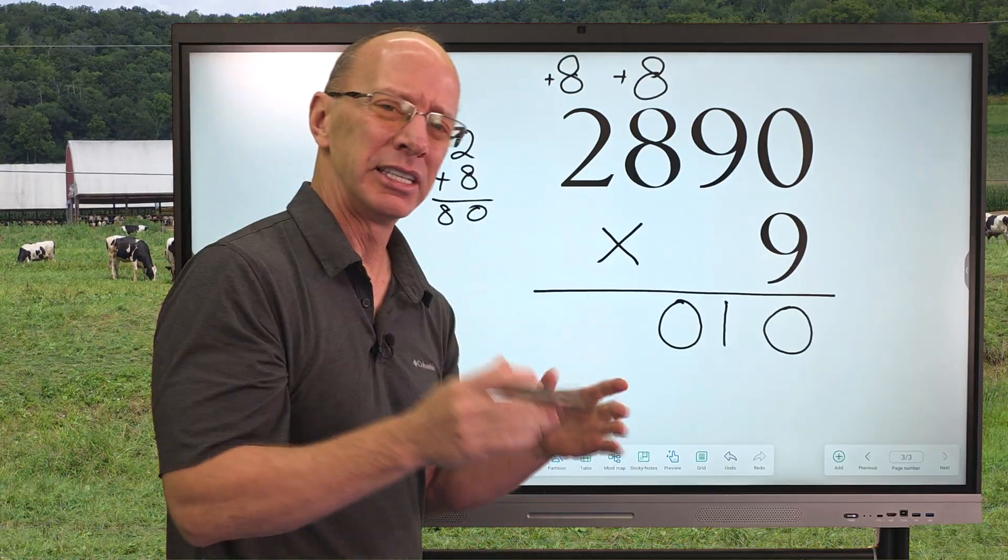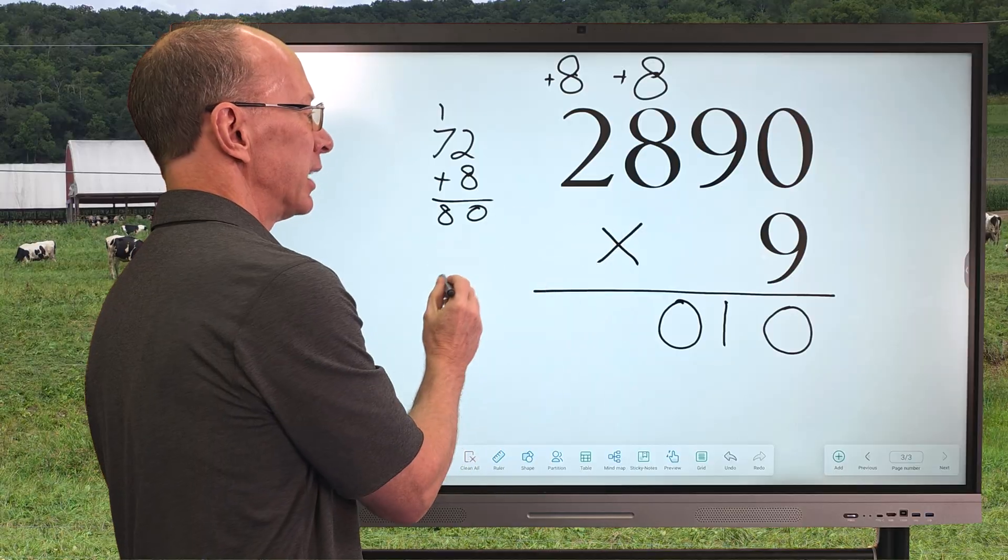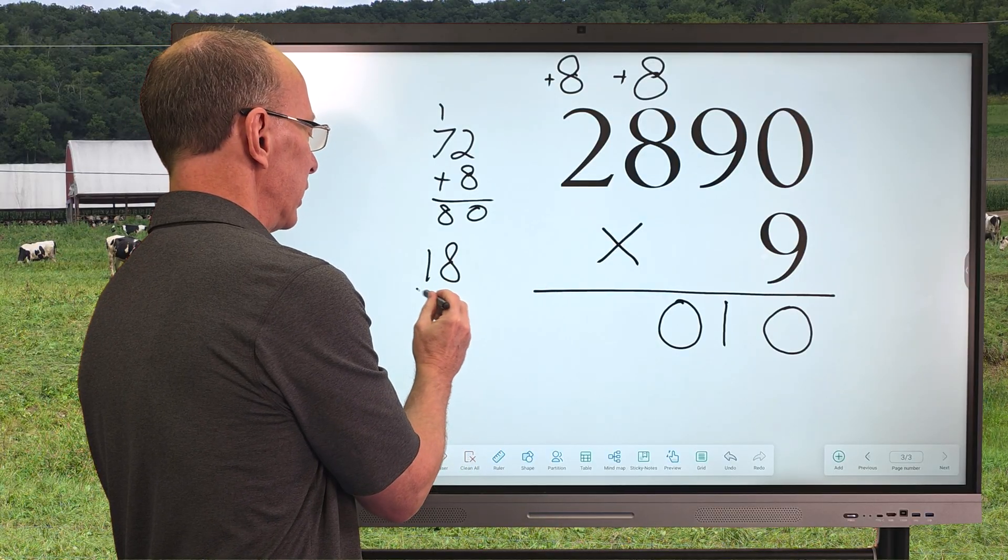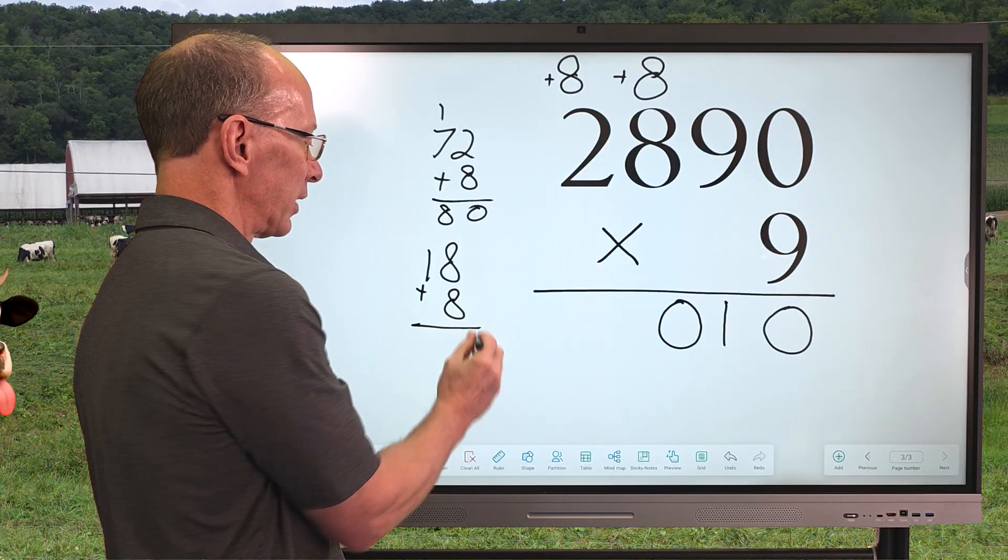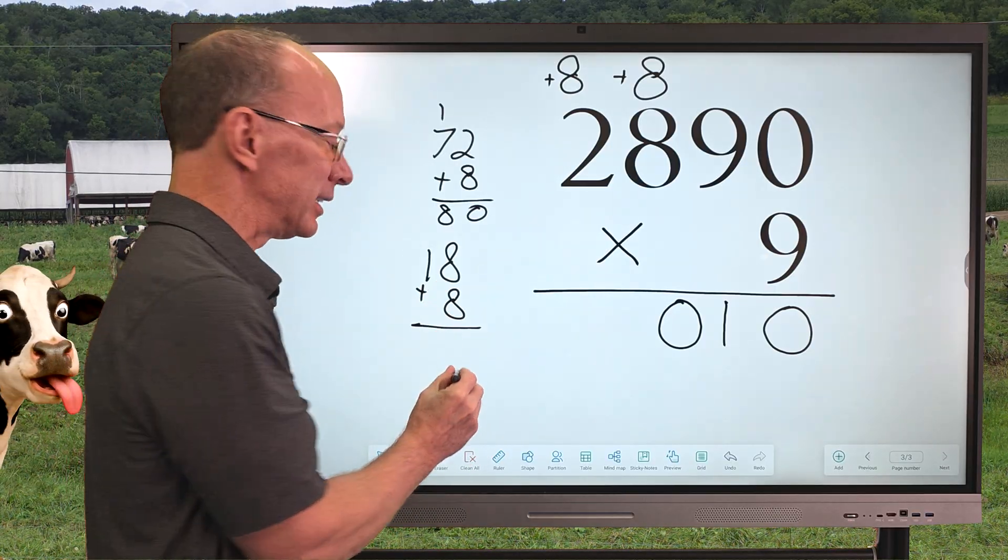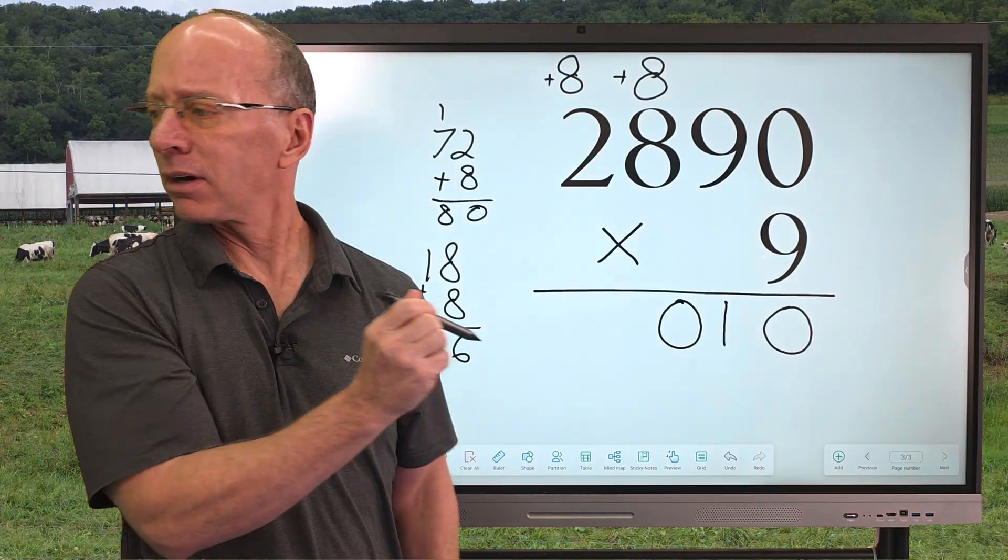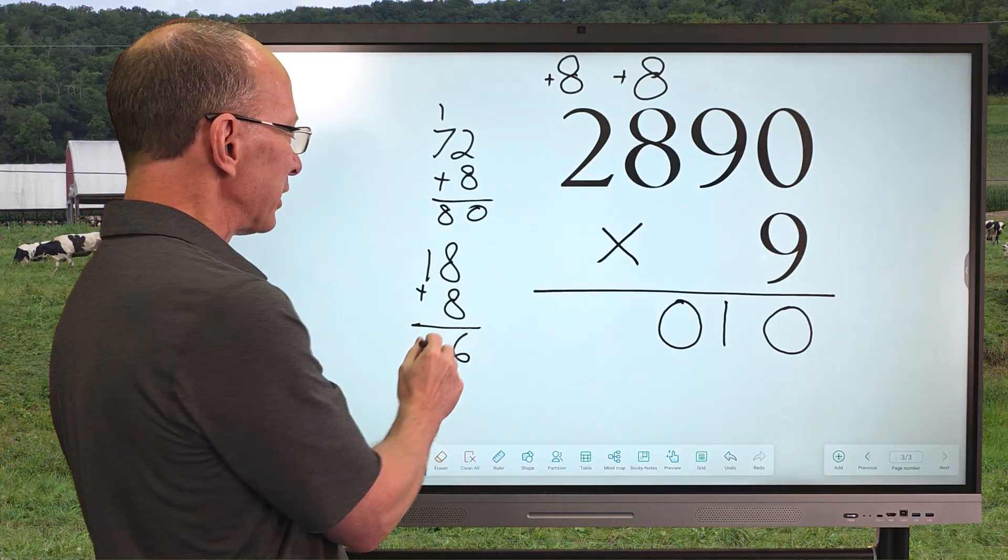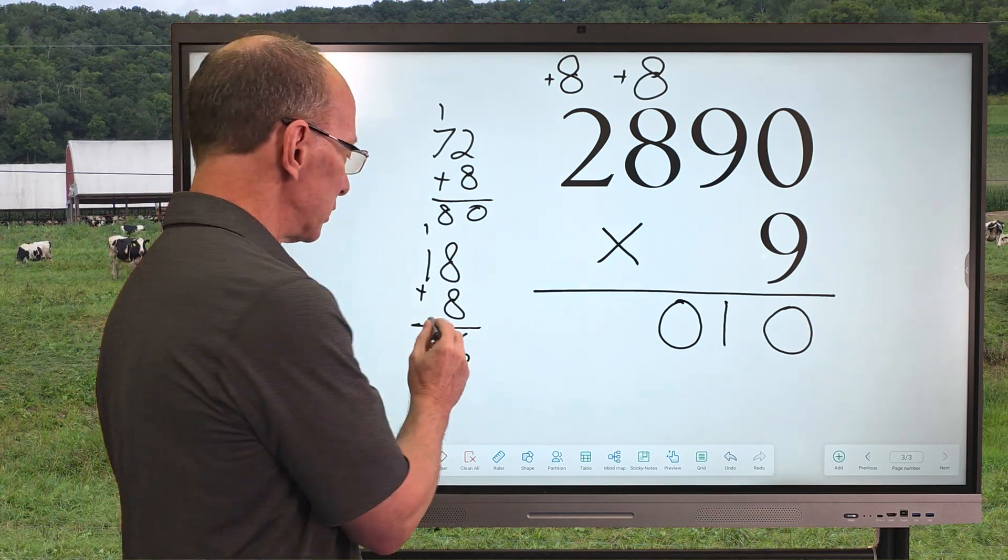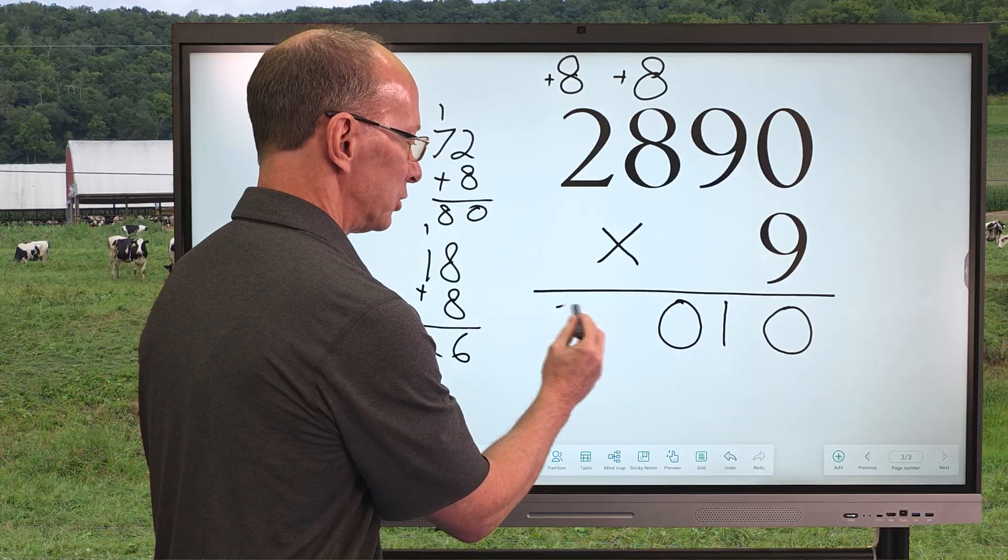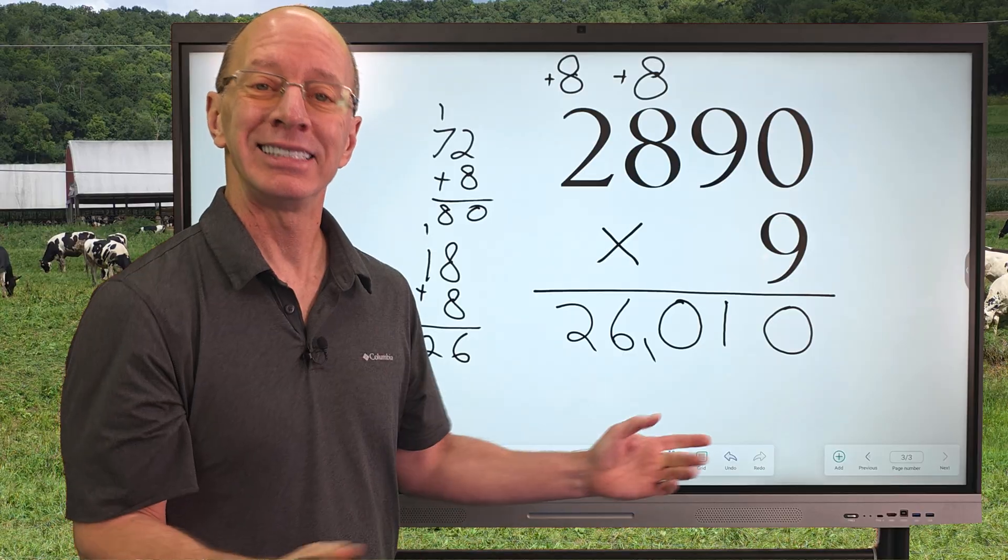So, 9 times 2 is 18. When these numbers get a little bit bigger, it's okay to write it off to the side. So, 9 times 2 would be 18 and then I'm going to add the 8. So, I'm going to put the 8 right here and then 8 plus 8 is 16. I thought I heard something over here. Carry the 1 and now 1 plus 1 equals 2. So, now I'm going to put 26 right here. So, I have 26,010.